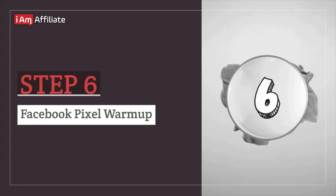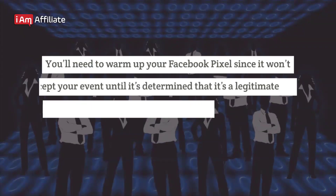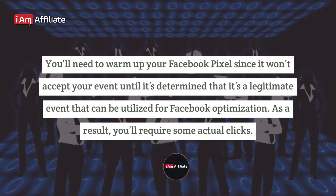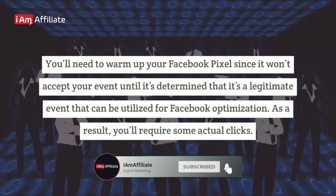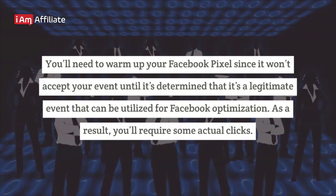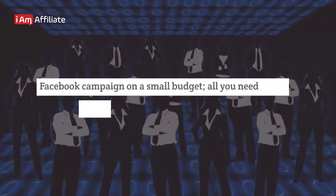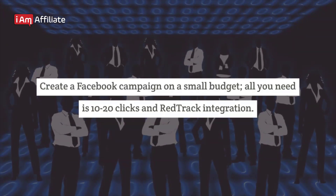Step 6: Facebook Pixel Warm-up. You'll need to warm up your Facebook Pixel since it won't accept your event until it's determined that it's a legitimate event that can be utilized for Facebook optimization. As a result, you'll require some actual clicks. Create a Facebook campaign on a small budget — all you need is 10 to 20 clicks in RedTrack integration.